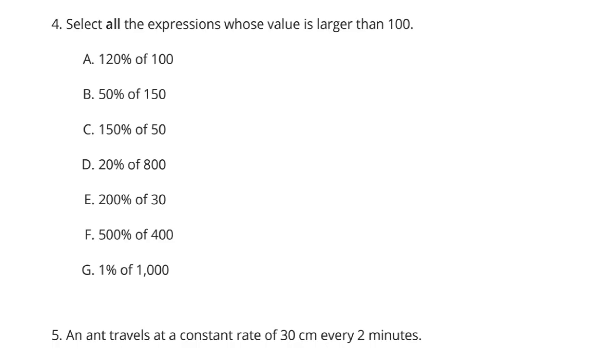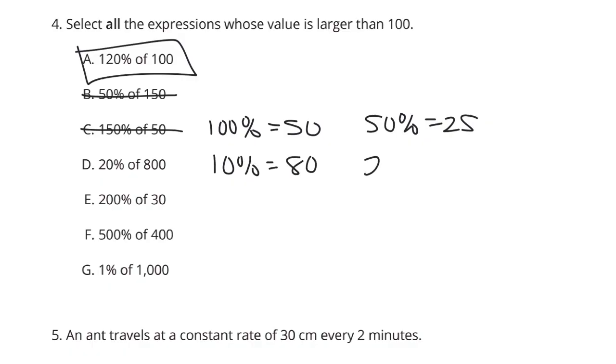Now, question four. Select all the expressions whose value is larger than 100. 120% of 100 is certainly larger because 100% of 100 is 100. 120% of 100 is bigger than that. 50% of 150, we're looking at half of 150, and that's around 75, so that's not it. 150% of 50, well, 100% of 50 is 50. 50% of 50 is 25, and I add those together, it's 75, so we're not above 100. 20% of 800, well, 10% of 800 is 80. 20% is going to be double that or 160, so yes, D, you're in the larger than 100 club. 200% of 30, well, 100% of 30 is 30. 200% of 30 is double that or 60, so no, not bigger than 100.